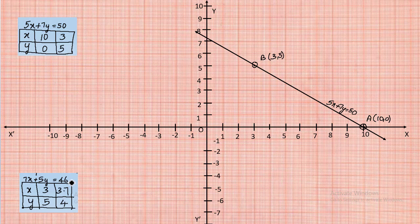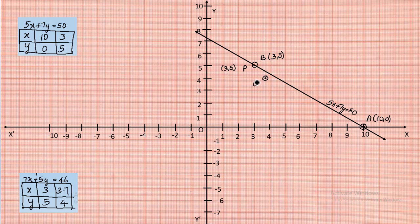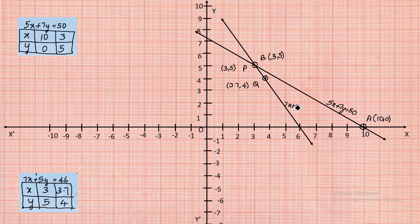For equation two (7x + 5y = 46), the first point is at x = 3, y = 5 — this point is common to both lines, so mark it as point P. The second point is at x = 3.7, y = 4 — mark this as point Q. Draw a line through P and Q representing 7x + 5y = 46. We observe that the two lines intersect at point (3, 5), which forms the unique solution.